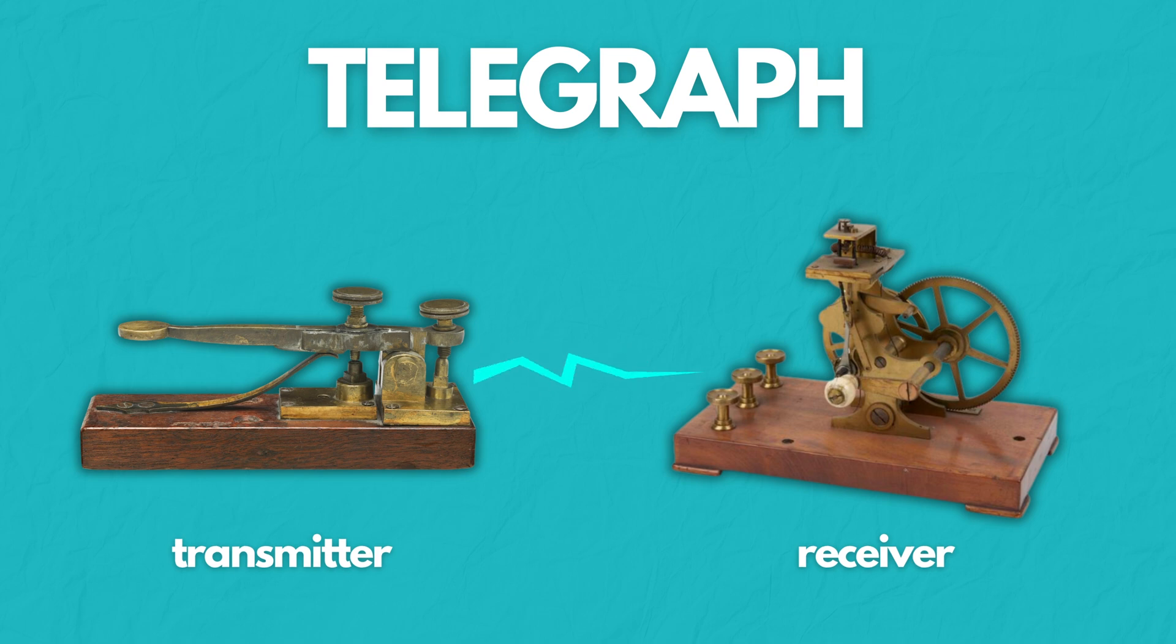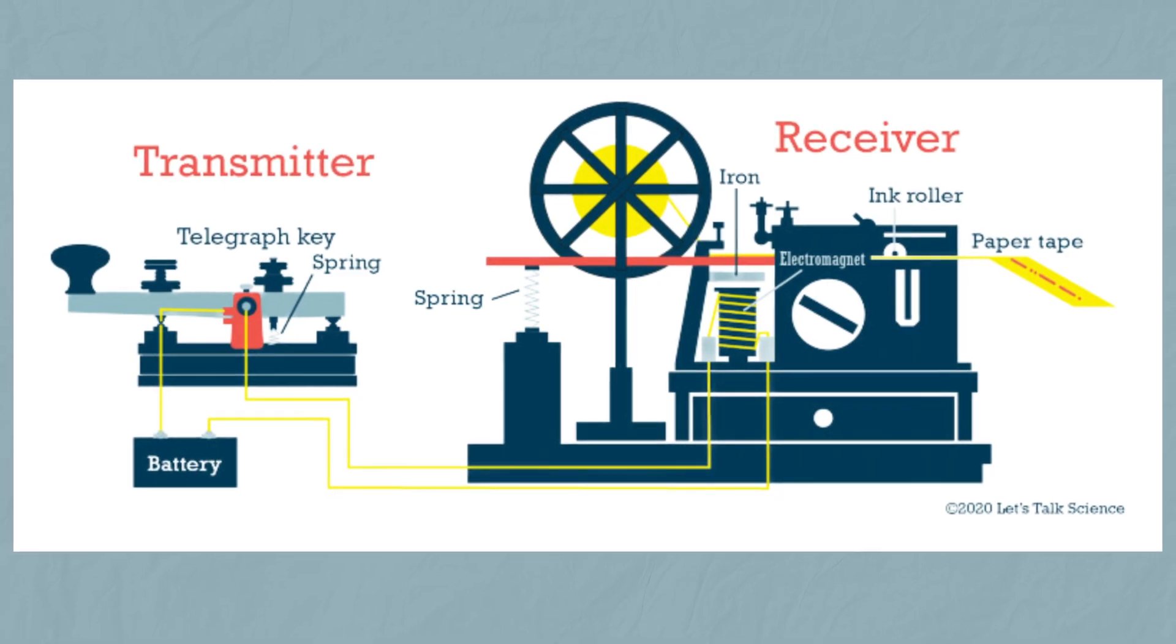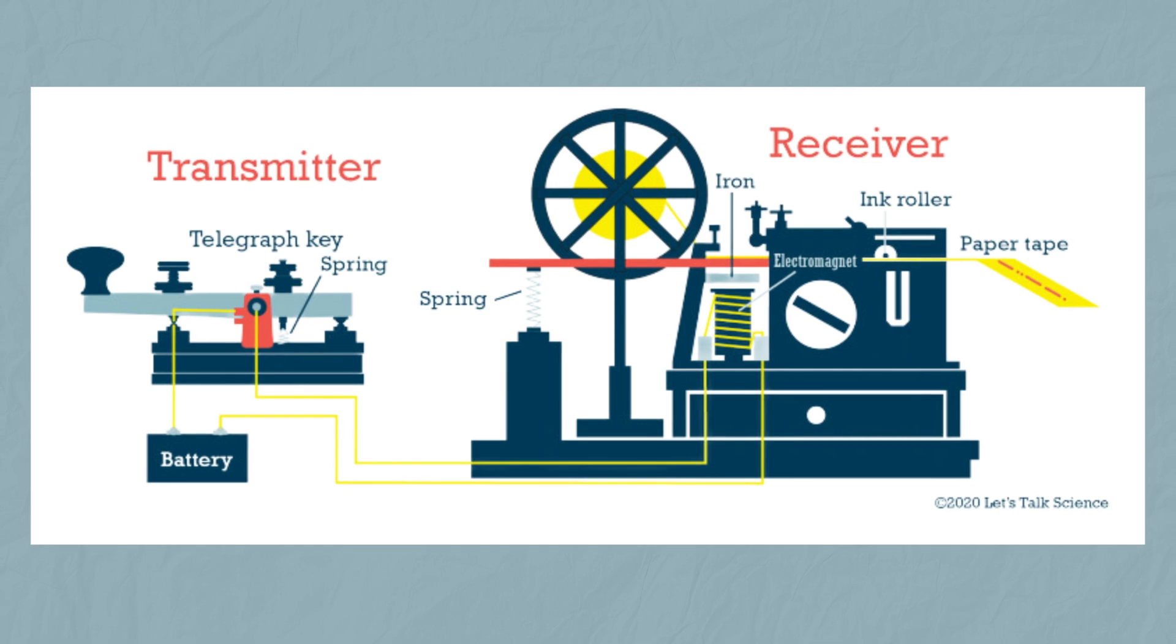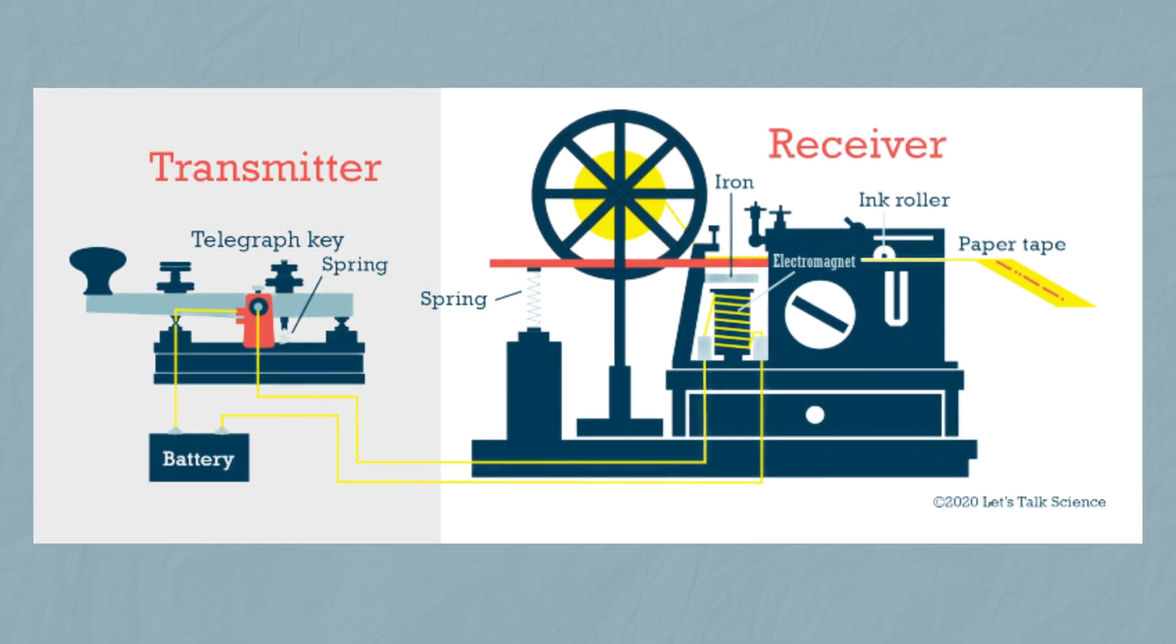It was a simple device that carried pulses of electricity over a wire. At one end of the wire was a transmitter. It had a battery to power it and a lever. So when the lever was pushed down, it would send a steady flow of electricity through the wire. And when the lever was lifted up, it would stop the flow of electricity through the wire.